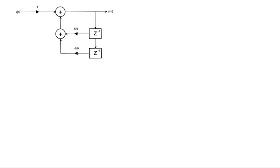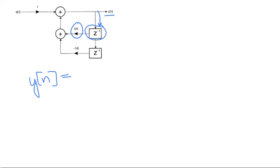So let's get started. To find the system difference equation, we can inspect the system block diagram. To start with, we can look at the output and have y of n, and then if we continue down this feedback loop, we'll hit a delay block here, so this is a one delay, which is a shift to the right, and we have a gain on it which is 5/6. So we have (5/6) y of n minus 1.